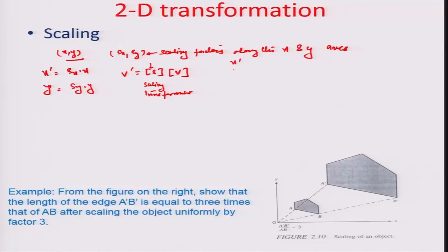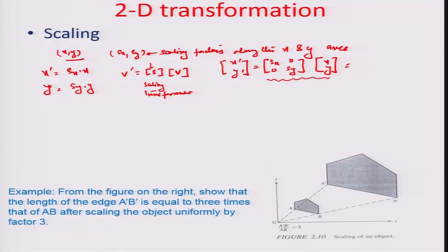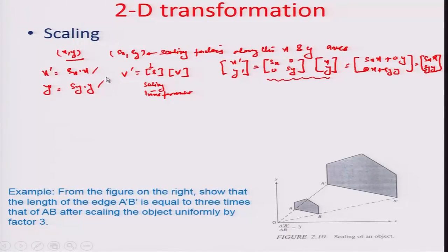In terms of column vectors, this is represented as vector v-dash equal to a scaling transformant S times vector v. In coordinates: [x-dash, y-dash] = [[Sx, 0], [0, Sy]] · [x, y], which expands to Sx·x and Sy·y — confirming the scaling equations.